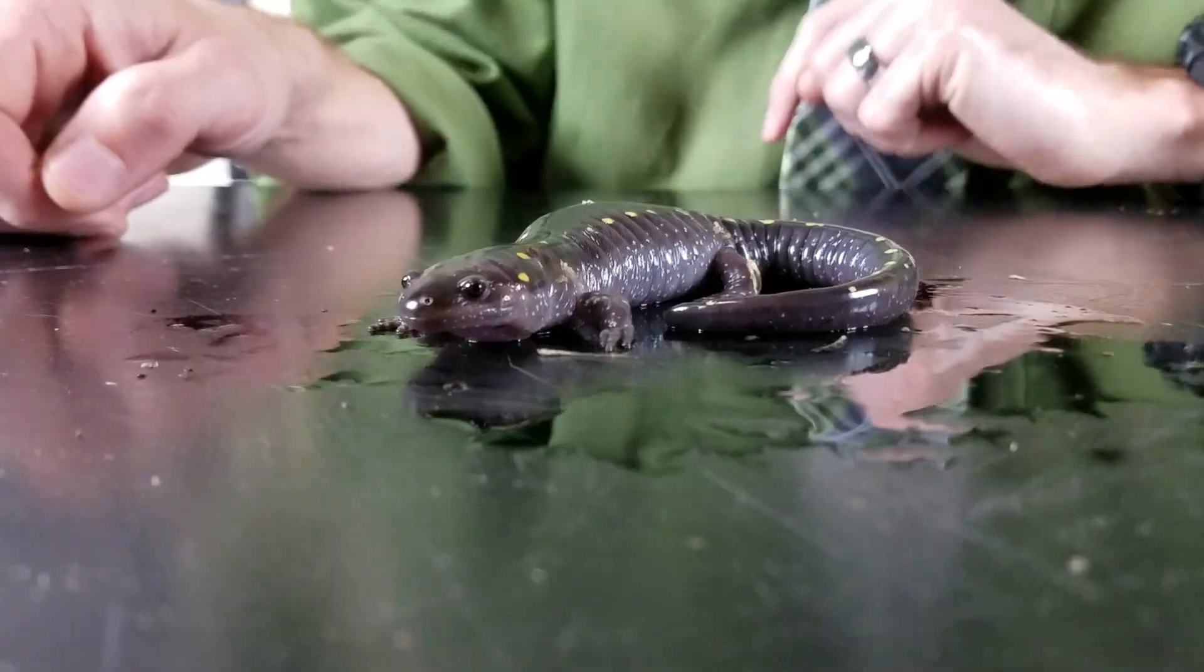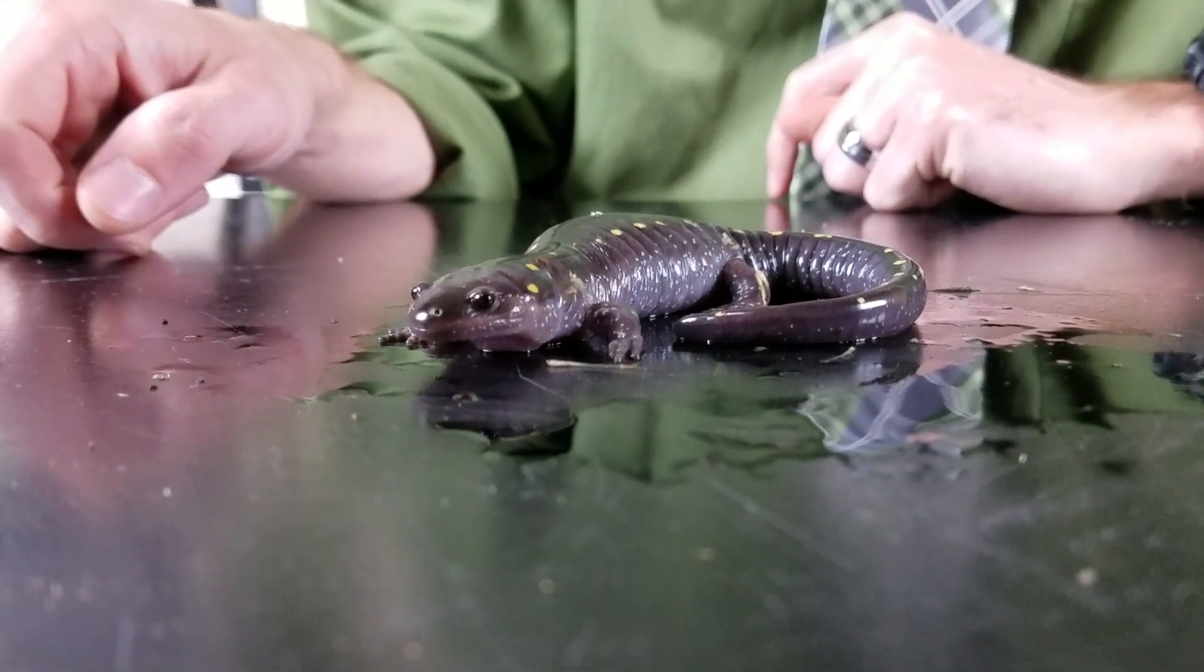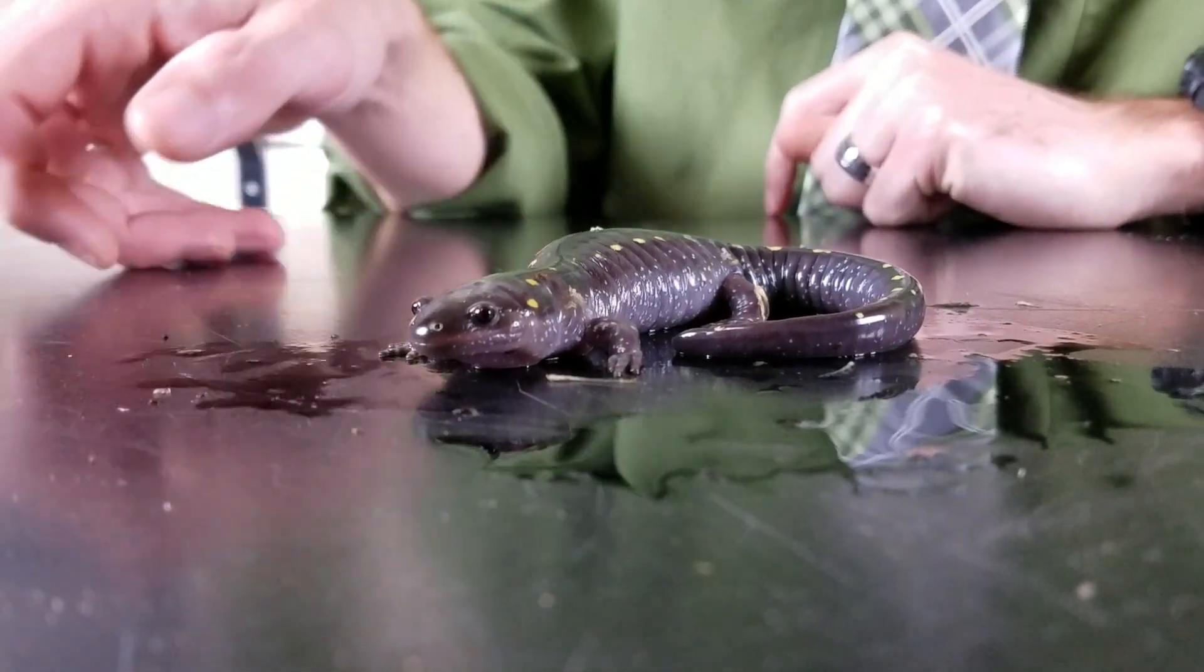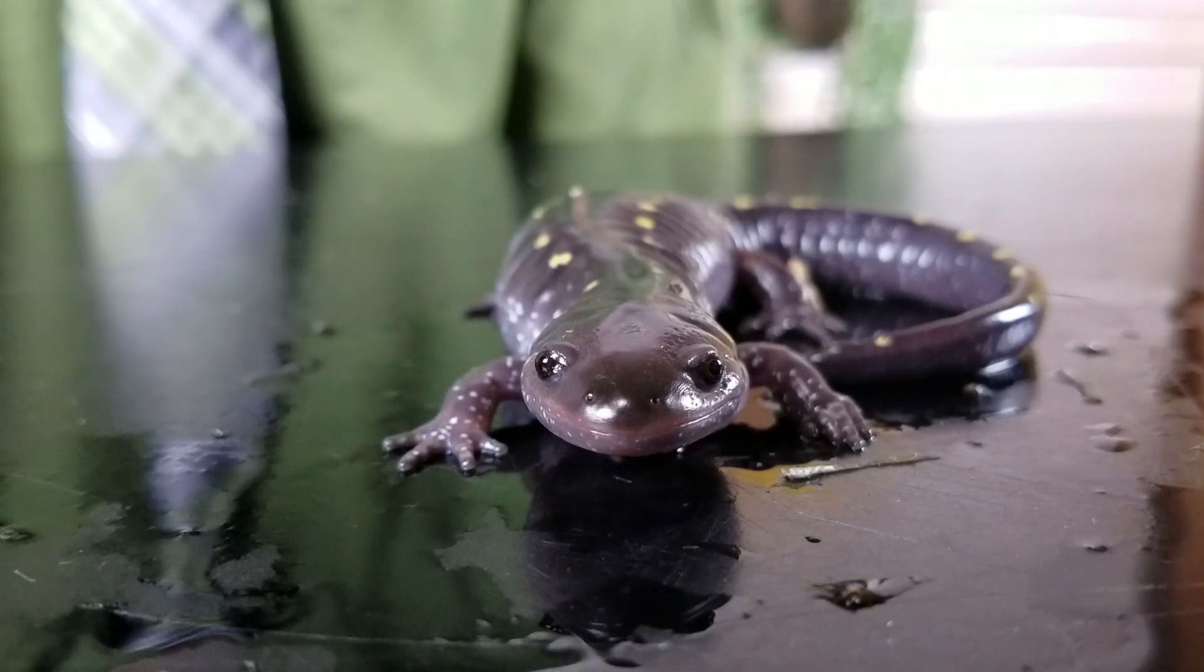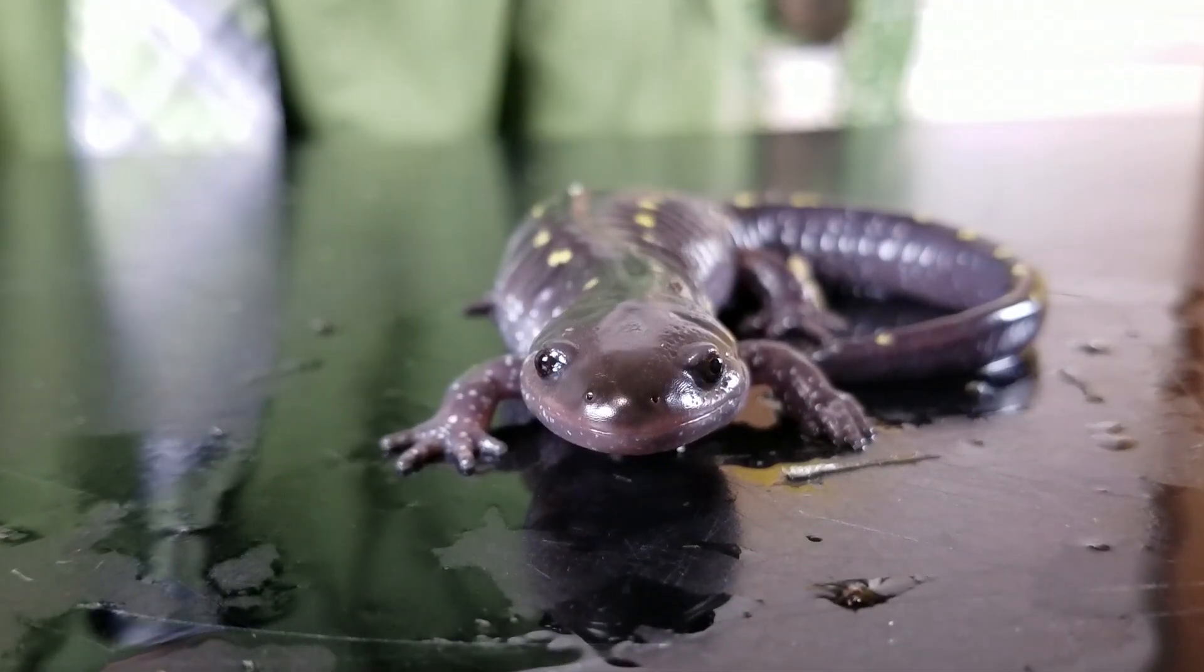These are the reasons that the spotted salamander gets a score of 3.8 out of 5. Again, that's not a super high score, but amphibians have certain drawbacks to them that are going to prevent any of them from scoring too much higher than that. This is really one of the best pet amphibians you could possibly get. That's actually why they were on our list of five of the best pet amphibians you could get, because they are so cool.